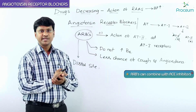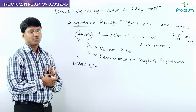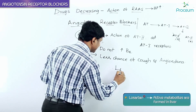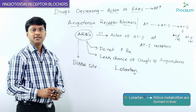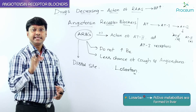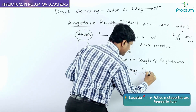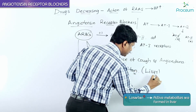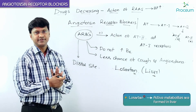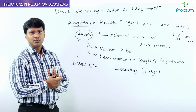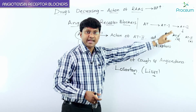One very important drug among ARBs is Losartan. Losartan results in the production of active metabolites in the liver. An important MCQ point to remember is that the active metabolites of Losartan are formed within the liver.